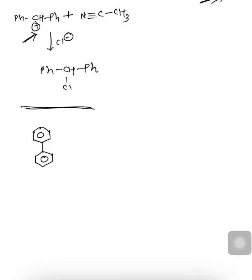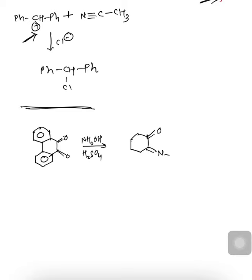Another example: benzil (Ph-C(=O)-C(=O)-Ph, that is, two carbonyl groups on benzene). Carrying out reaction with NH2OH in presence of H2SO4: in the first step there is formation of a ketoxime. Both groups are similar, so we take one of them as N-OH; the remaining structure is the same.